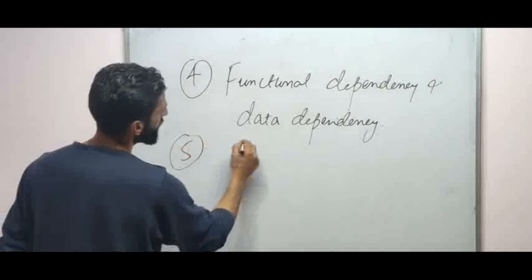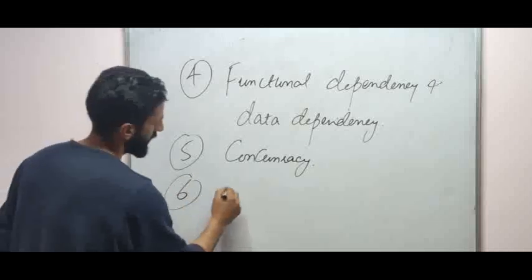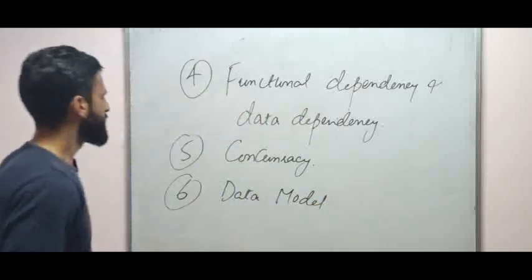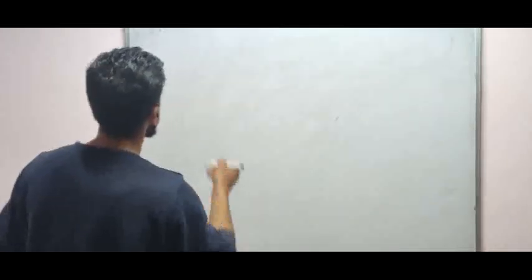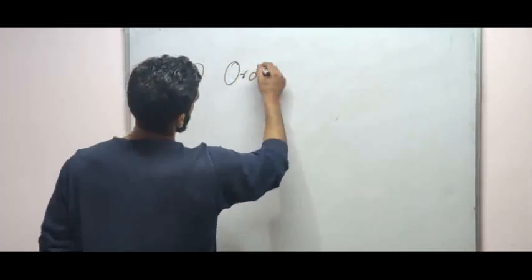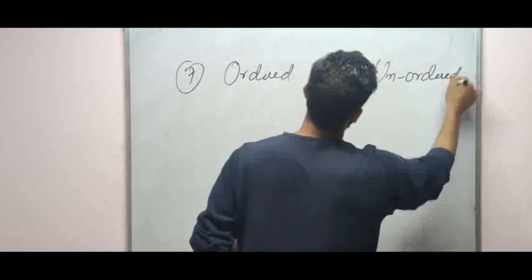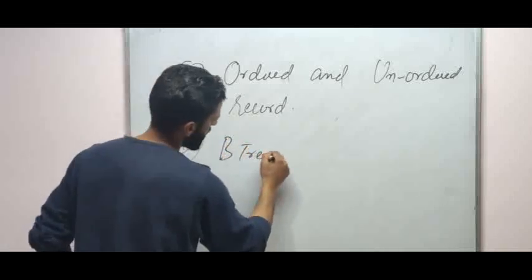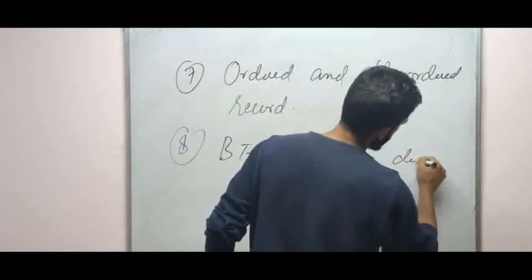The fifth question will be concurrency. The sixth question will be data model. The seventh question will be ordered and unordered records. The eighth question will be B-tree and B+ tree difference with examples.